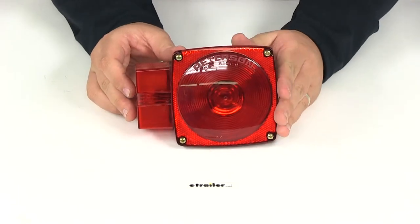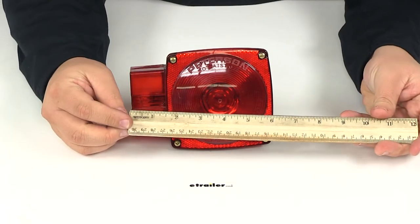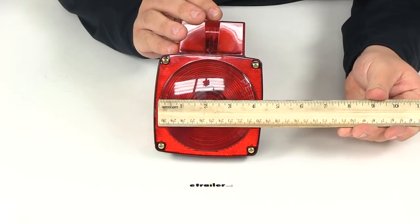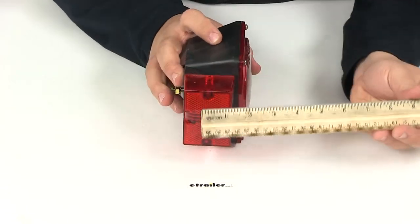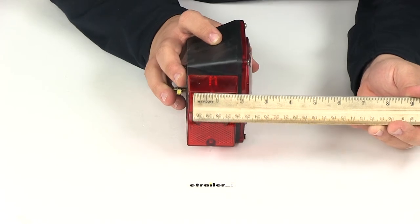The overall length from edge to edge is six inches. Measuring this direction it's four and a half inches, and the overall depth from the back of the housing to the front of the lens is two and seven eighths of an inch.